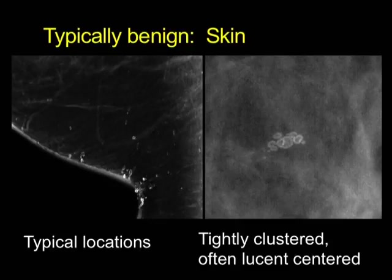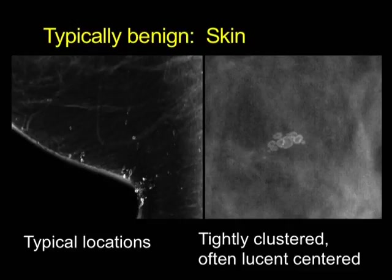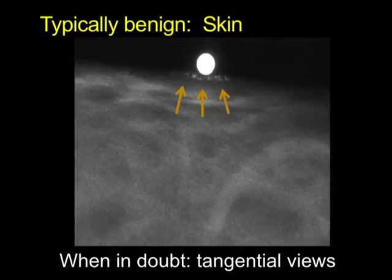The next category is skin calcifications. Skin has typical locations such as the inframammary fold, along the sternum, and in the axilla. If you look carefully, they should be tightly clustered, and often you'll find a couple that are loose and centered. Sometimes you'll need to bring the patient back for a diagnostic, place a BB right on the calcifications, and do a tangential view to see whether those calcifications triangulate to the skin. If they do, you're done.